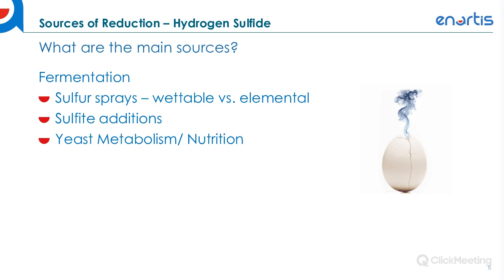What are the main sources of reduction? For hydrogen sulfide, the main sources during fermentation include sulfur sprays — both wettable and elemental forms — which can have a very strong impact on the amount of H2S produced. Sulfite additions can also impact H2S production. And yeast metabolism and nutrition is the third main source. These are the sources I'll focus on today because they're actionable — things we can actually control in the winemaking process.